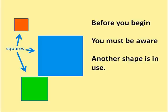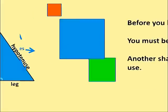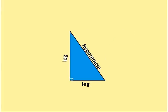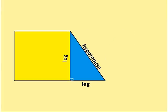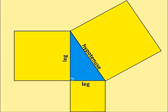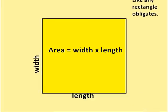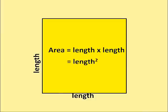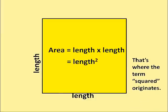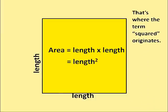Before you begin, you must be aware, another shape is in use. You need to sketch a perfect square on each leg about the sides. A square's area is its width times length, like any rectangle obligates. It just so happens they're the same length, and that's where the term 'squared' originates.